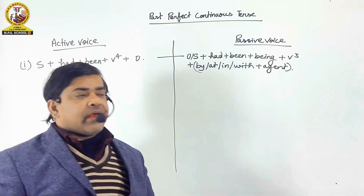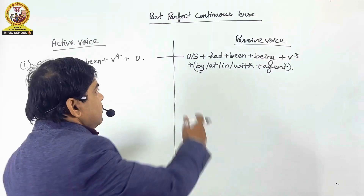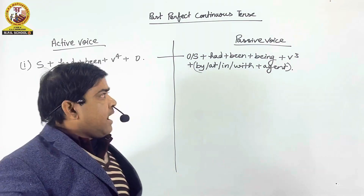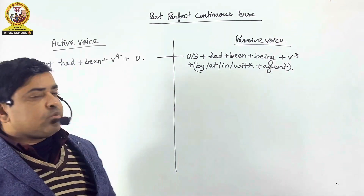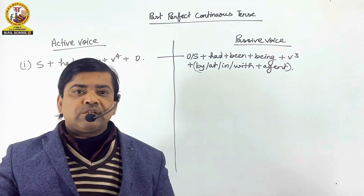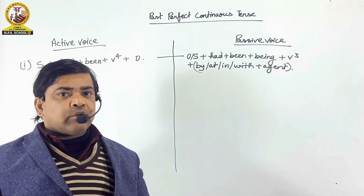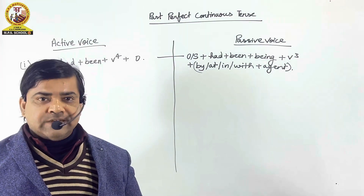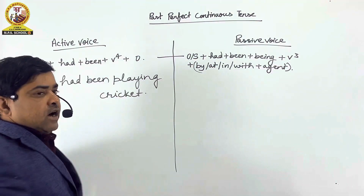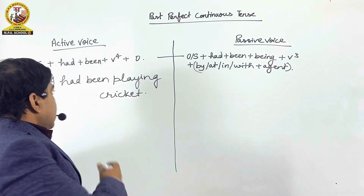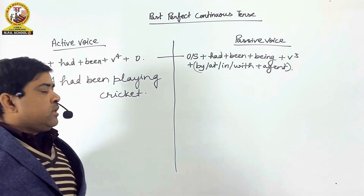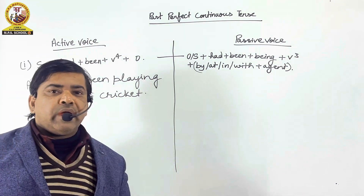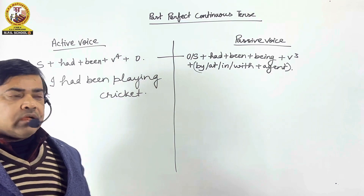And in passive voice, we use the structure formula: object/subject + had + been + being + V3 + by/at/in/with + agent. For example, in active voice: 'I had been playing cricket.'